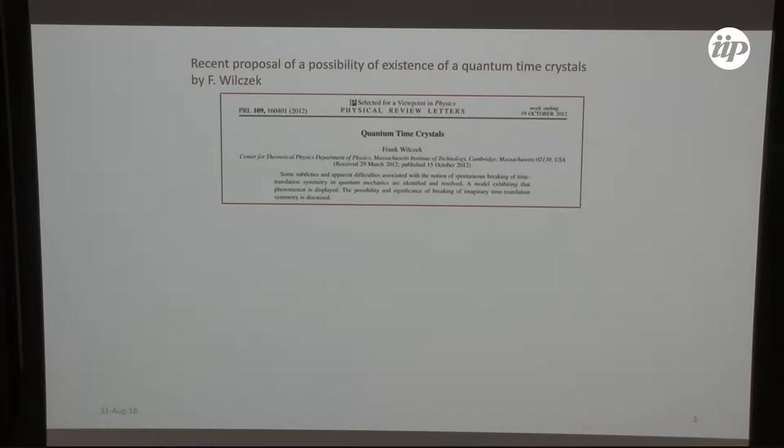So the first person who started to speak of possibility of existence of quantum time crystal was Frank Wilczek. His idea was let us take some superfluid or superconductor with some inhomogeneity in the current. If this current flows without any resistivity and you have some inhomogeneity of density, then it will somehow oscillate in time.